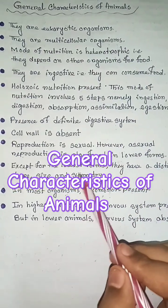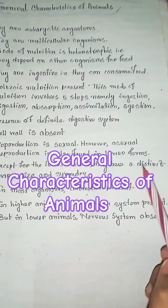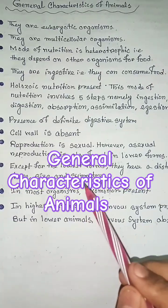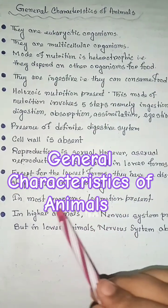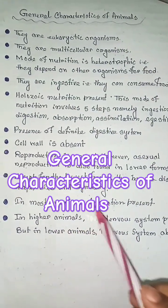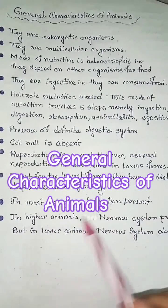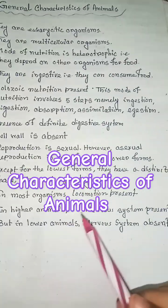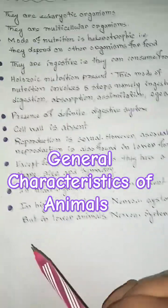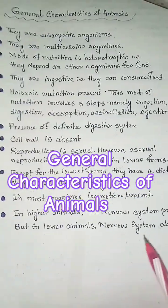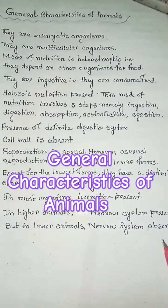Except for the lowest forms, animals have a distinct shape, size, and symmetry. In most organisms, locomotion is present. In higher animals, a nervous system is present, but in lower animals, the nervous system is absent.